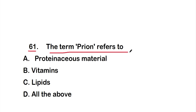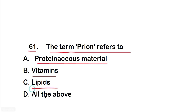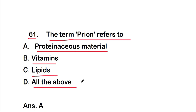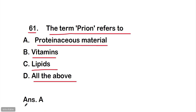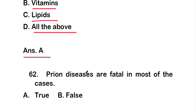Question 61: The term 'prion' refers to — option A: proteinaceous material, option B: vitamins, option C: lipids, option D: all of the above. The right answer is option A, that is proteinaceous material.